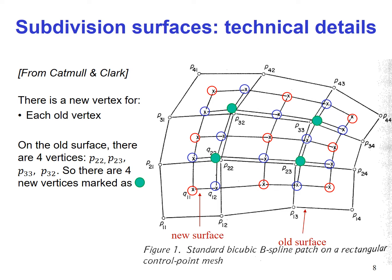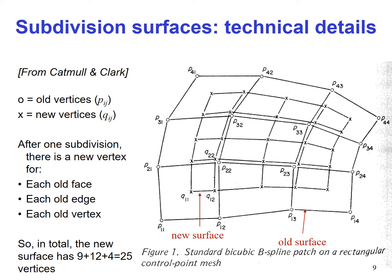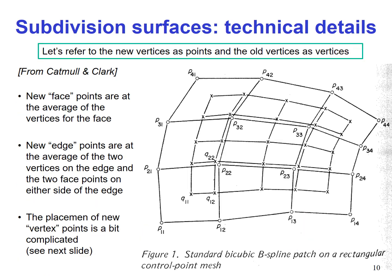On the old surface there are 4 inner vertices — the outer ones are not considered because that is the end of the surface — giving 4 new vertices marked with filled green circles. Calculating them all together: 9 plus 12 plus 4 equals 25 new vertices formed from the previous ones. We will refer to the new ones as points and the old ones as vertices to understand the process of how they are placed.